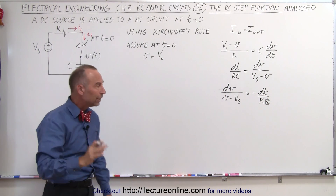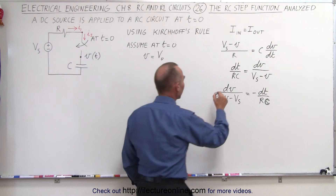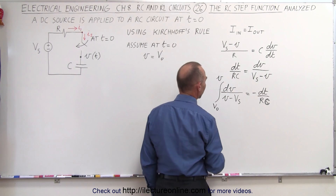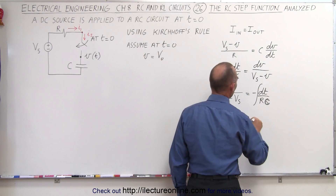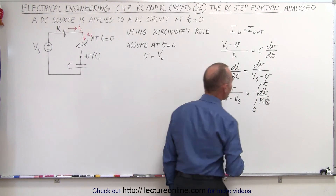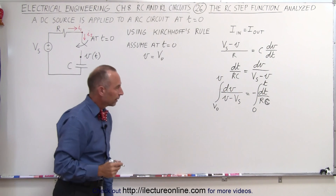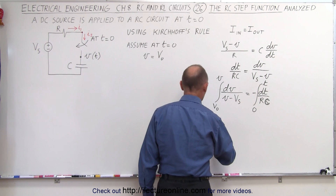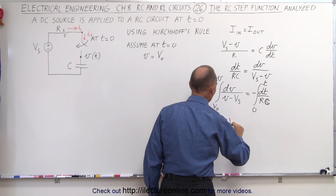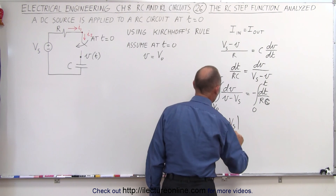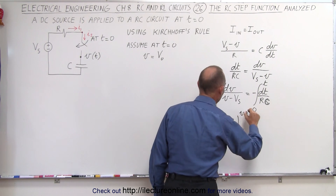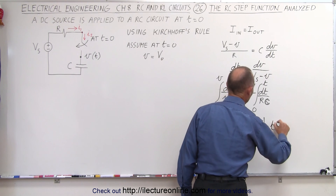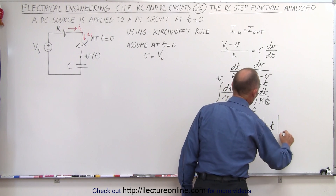Now we're able to take the integral of both sides. We're going to integrate the left side from V_initial to V across the capacitor, and we're going to integrate the right side from 0 to t. On the left side, that gives us the natural log of the denominator — the natural log of V minus V_S — evaluated from V_0 to V, and that is equal to negative 1 over RC times t, evaluated from 0 to t.